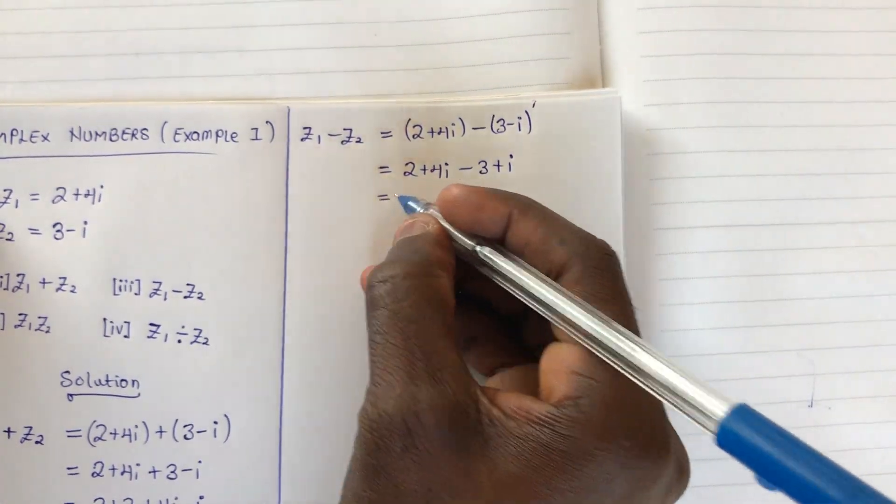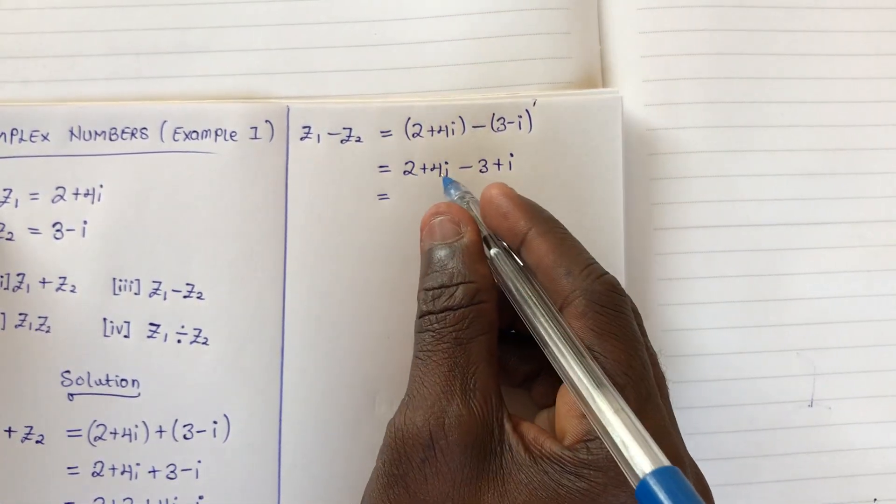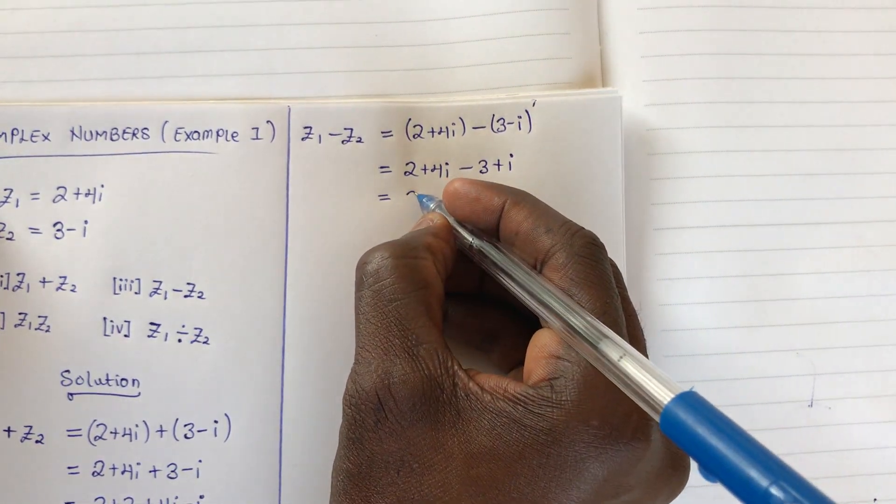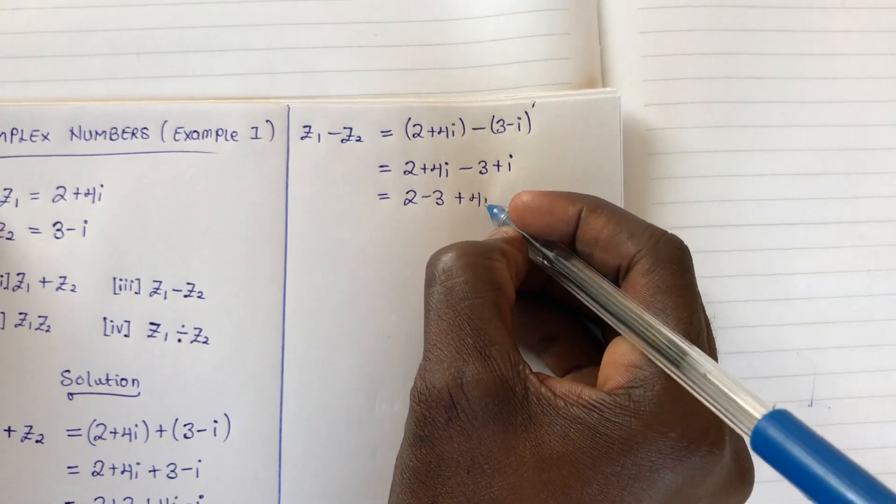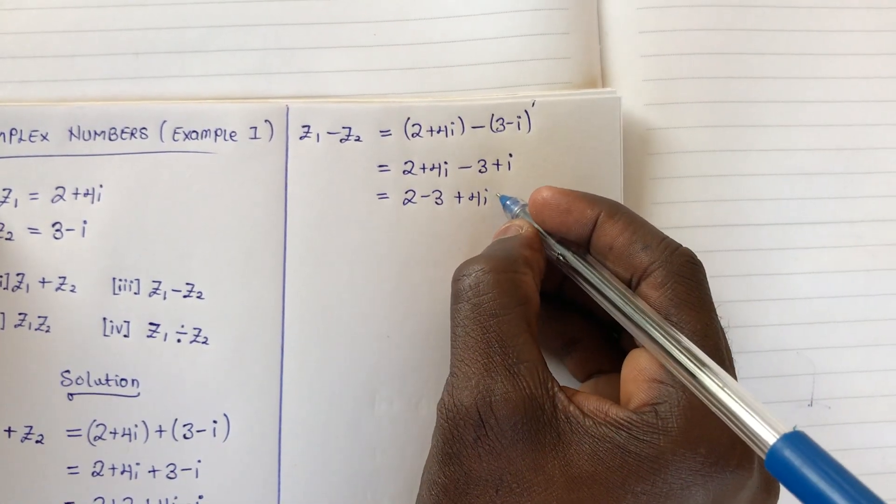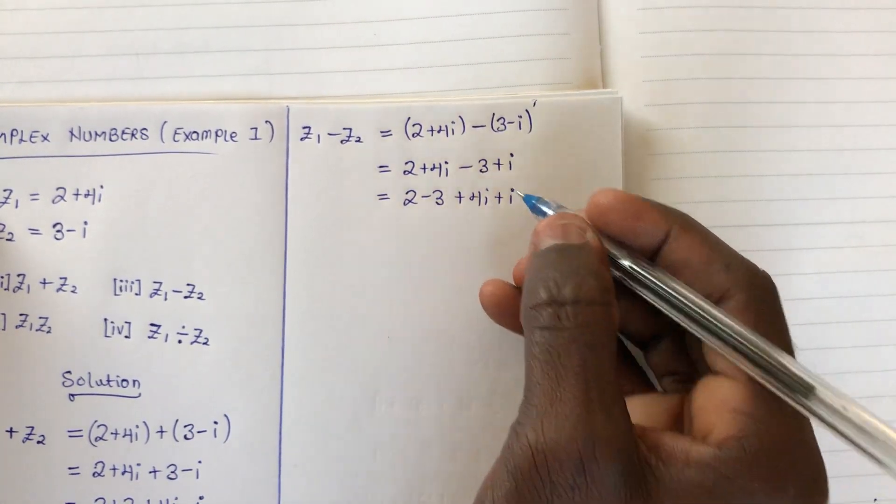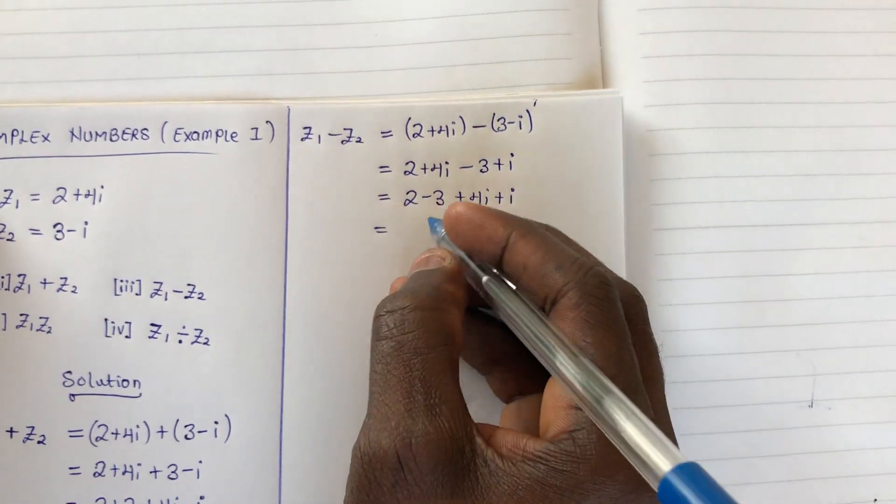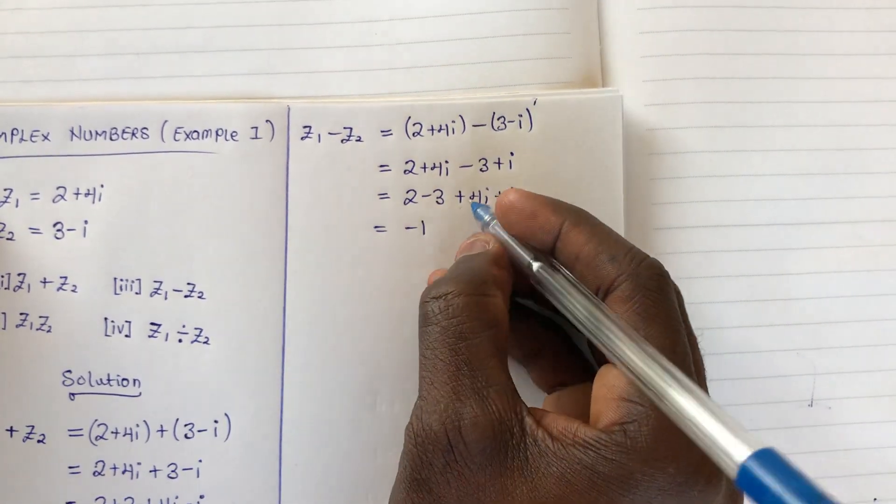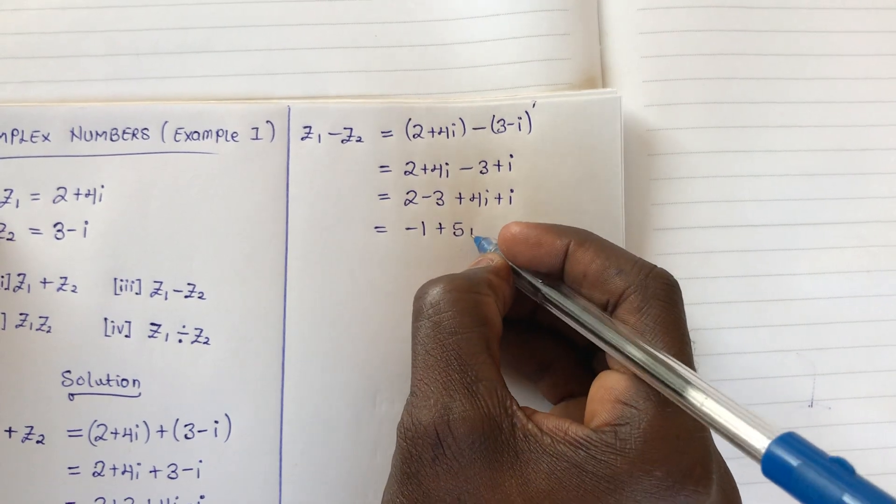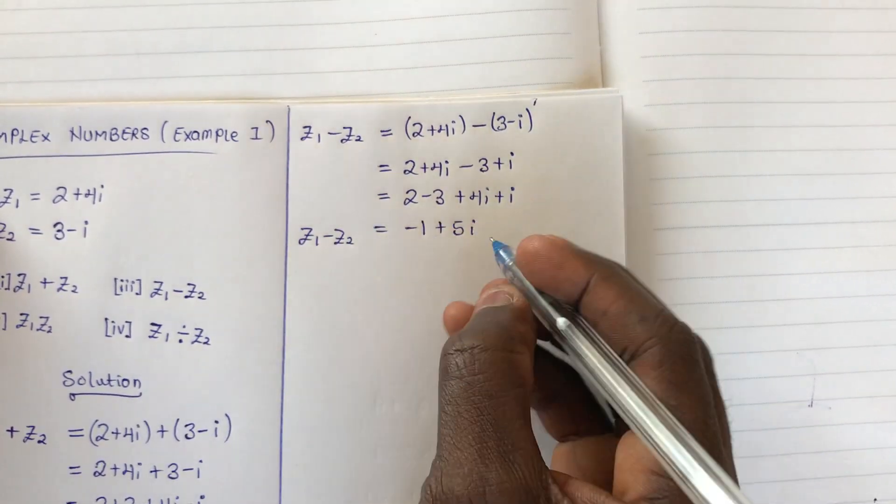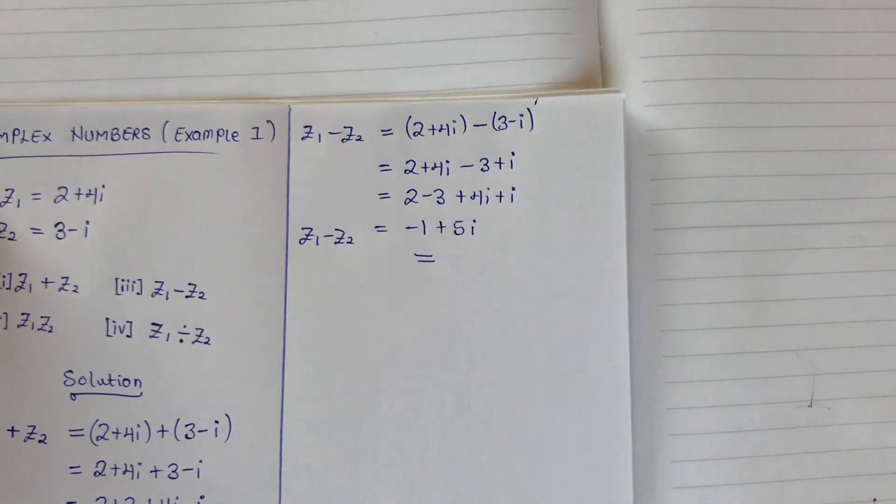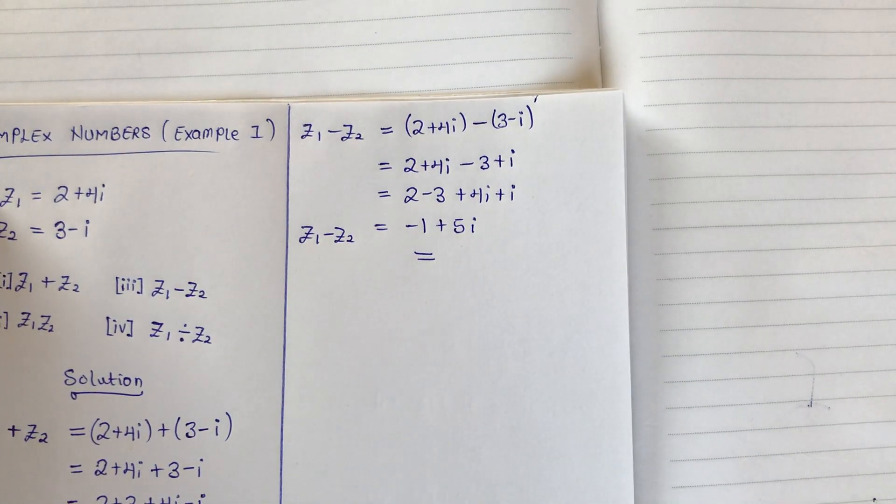Grouping like terms - all reals and all imaginary - we have (2 - 3) + (4i + i) = -1 + 5i. So z1 - z2 = -1 + 5i. That is it for the subtraction.